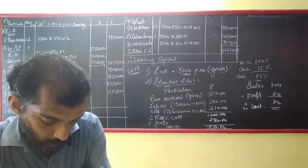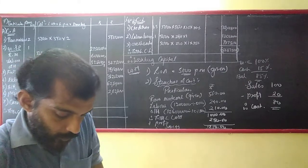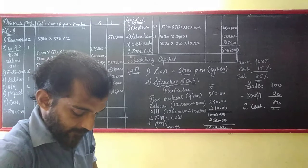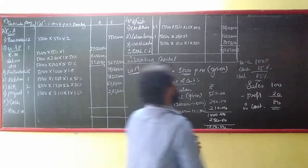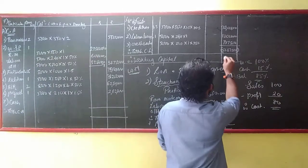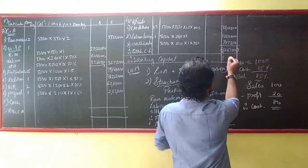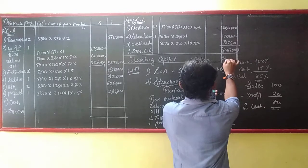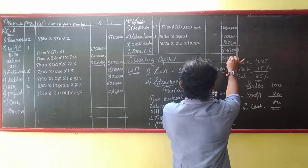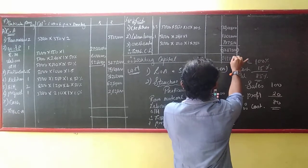Net working capital is ₹2,49,70,588. So 15% cash = ₹37,45,588.